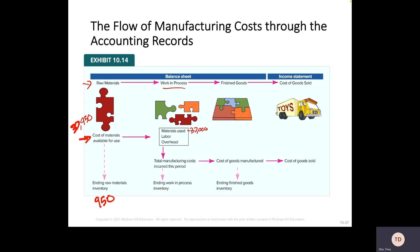You add in the labor and the overhead to get your total manufacturing costs. In the example on the next page — page 380 — you've got labor of $36,600 and overhead costs of $26,700. When you add up those three components, your total manufacturing costs come to $98,300.